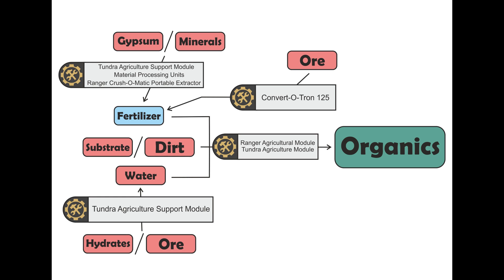The next chain we will discuss is all about producing organics, and it is in fact very similar to the chain we just discussed for producing supplies — there are just two small differences. The base resources needed to produce organics are the same as for supplies, so you will obviously need fertilizer, water, substrate, and dirt. You can process those into organics in either the Tundra or Ranger agriculture module. Note that the Duna agriculture module is not capable of organics production, so you need to keep that in mind. The second difference is that the organics chain has no dedicated waste resource. Overall, both chains are pretty similar and you will be able to switch between the two in most cases without any trouble.